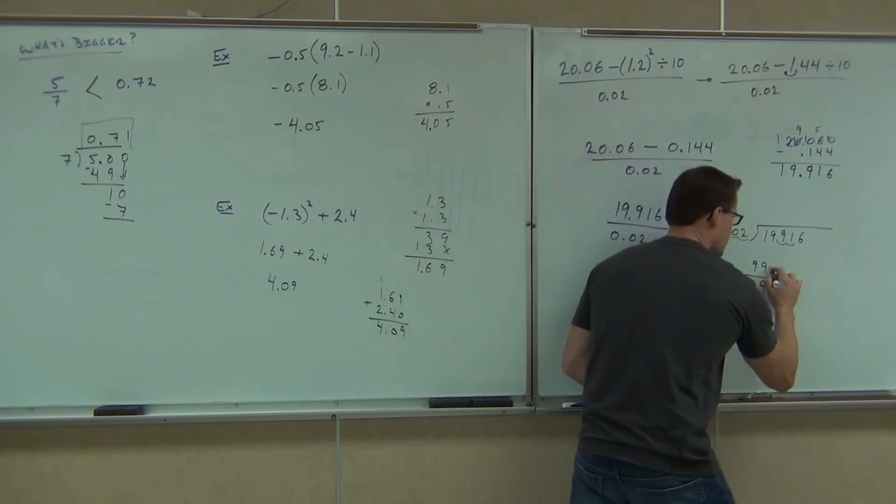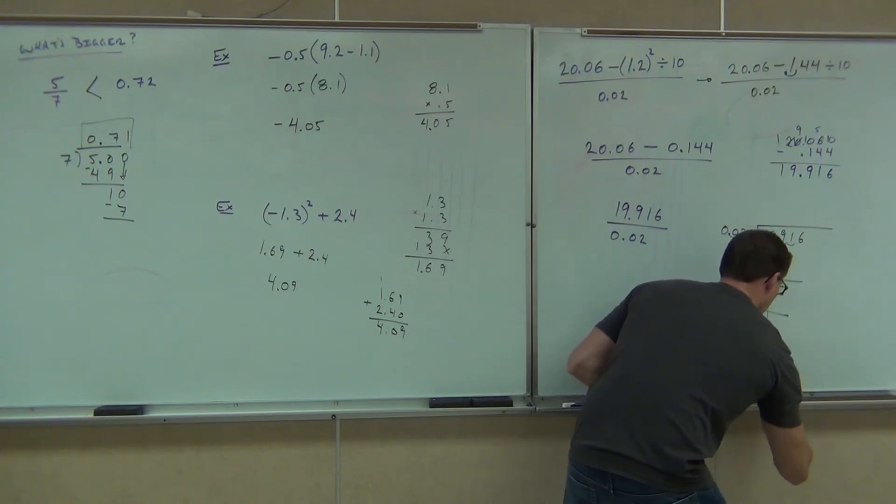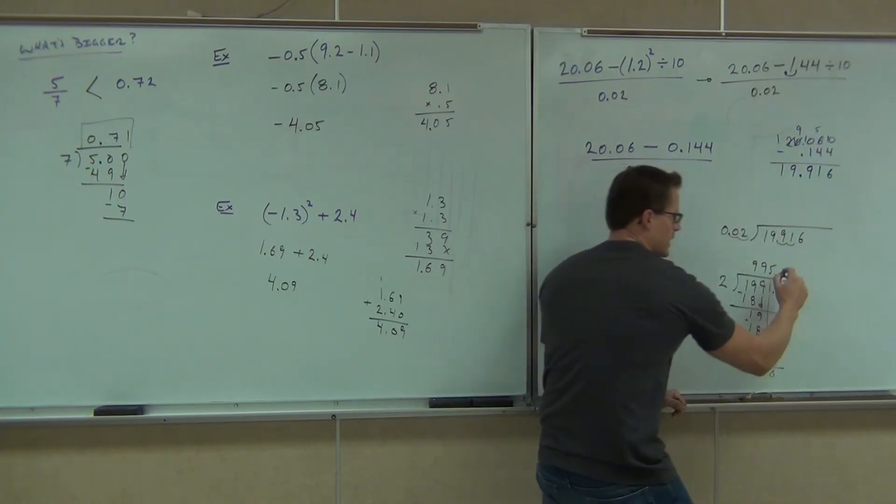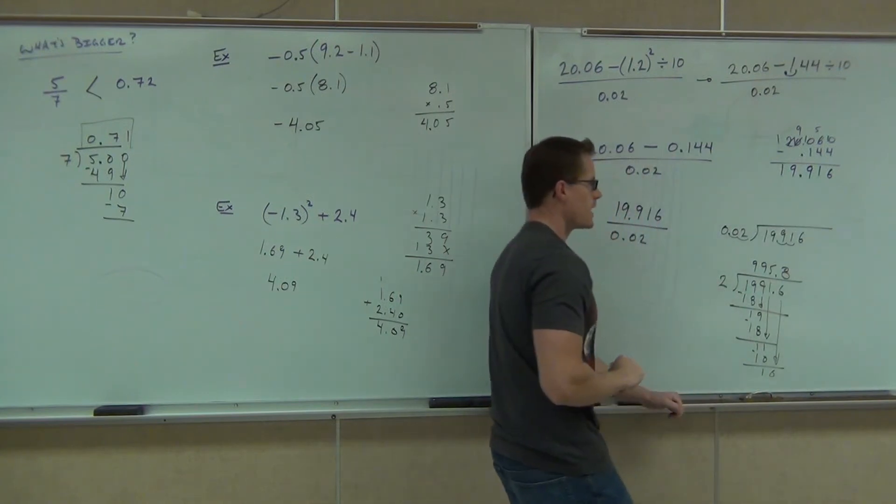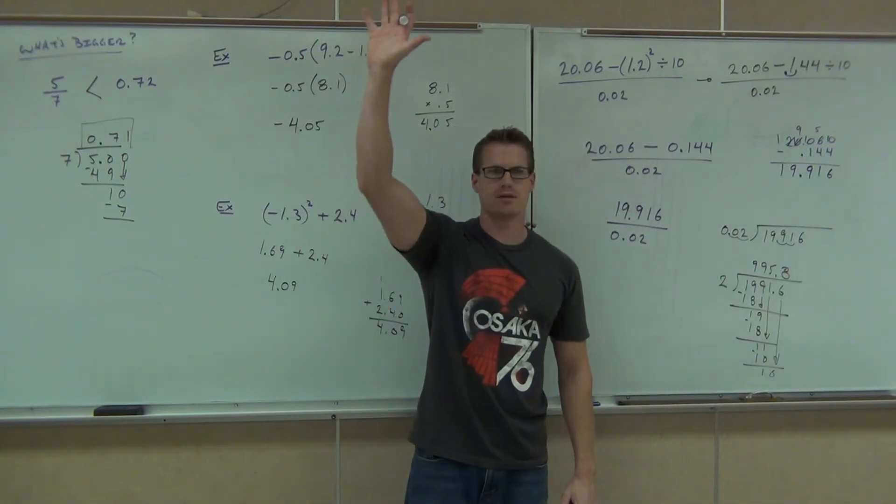Goes in five times, I get a ten. I subtract and get one, bring down six. That goes in eight times. Our answer is going to be 995.8. People got 995.8, good, that's fantastic.